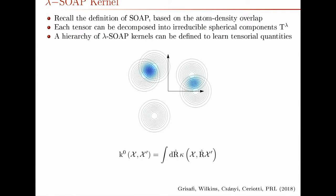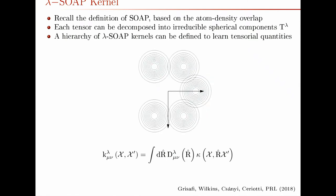This gives us our recipe to define a tensorial kernel. Our original scalar kernel is an average over all possible orientations of environments. To define a tensorial kernel, all you do is take this usual average over orientations but weight them by the Wigner-D matrix as you rotate them. This gives you a kernel that is tensorial and has the correct L=lambda properties.